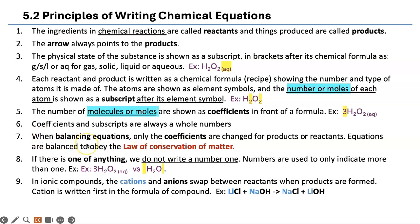Number seven: when balancing equations, only coefficients are changed for products and reactants. Equations are balanced to obey the law of conservation of matter. If there is only one of anything, you do not write the number one — just leave it as is. Numbers are only used when you have more than one.